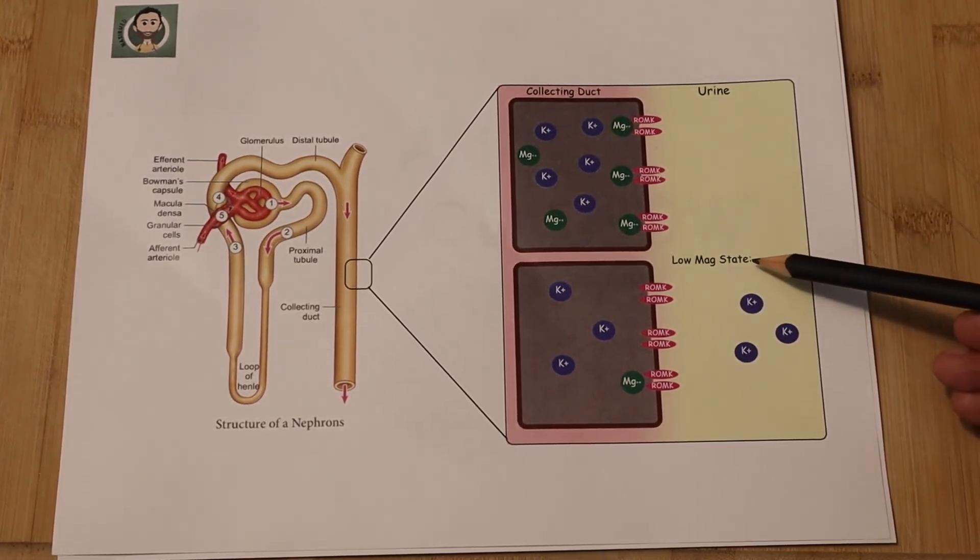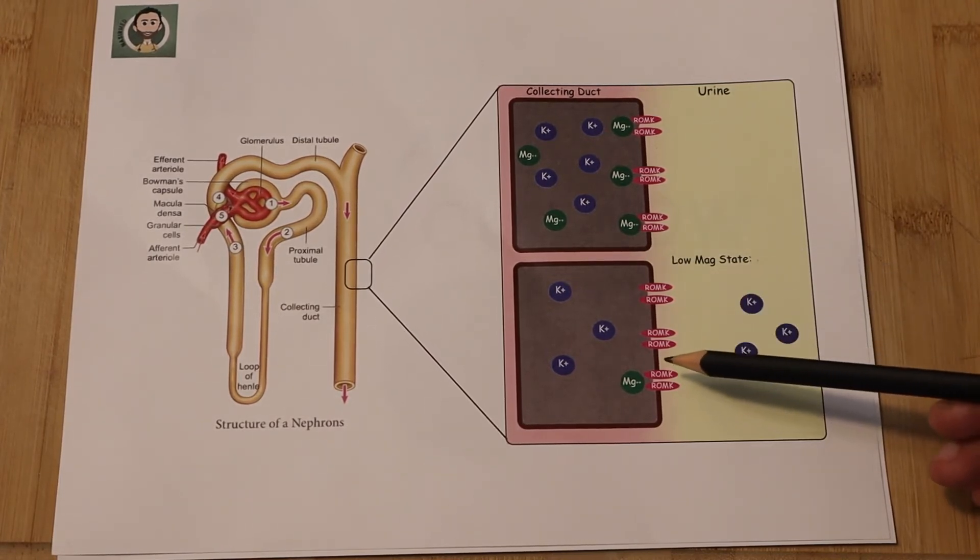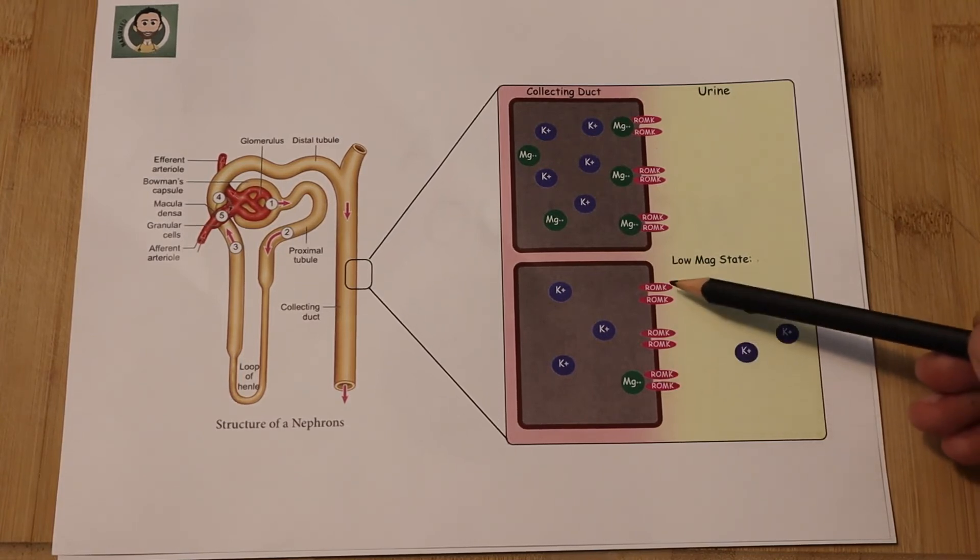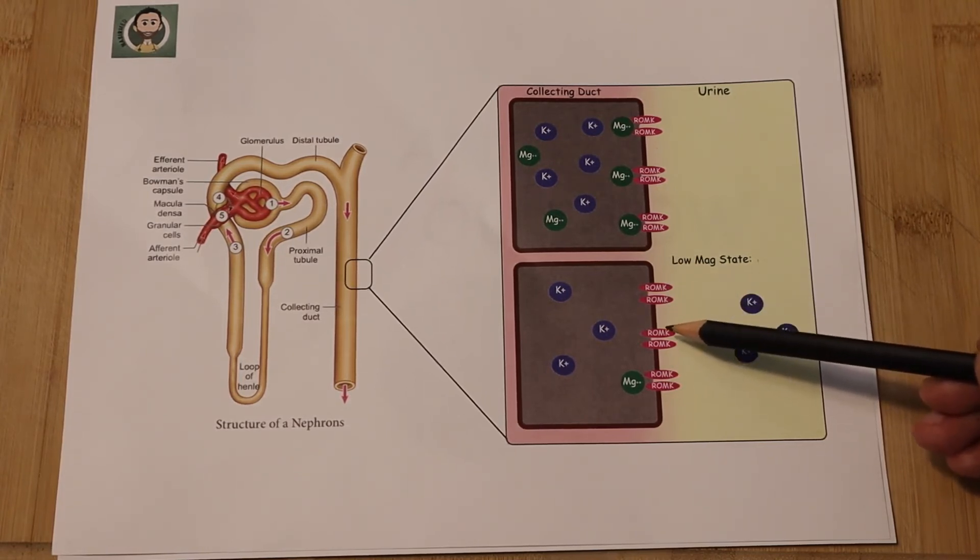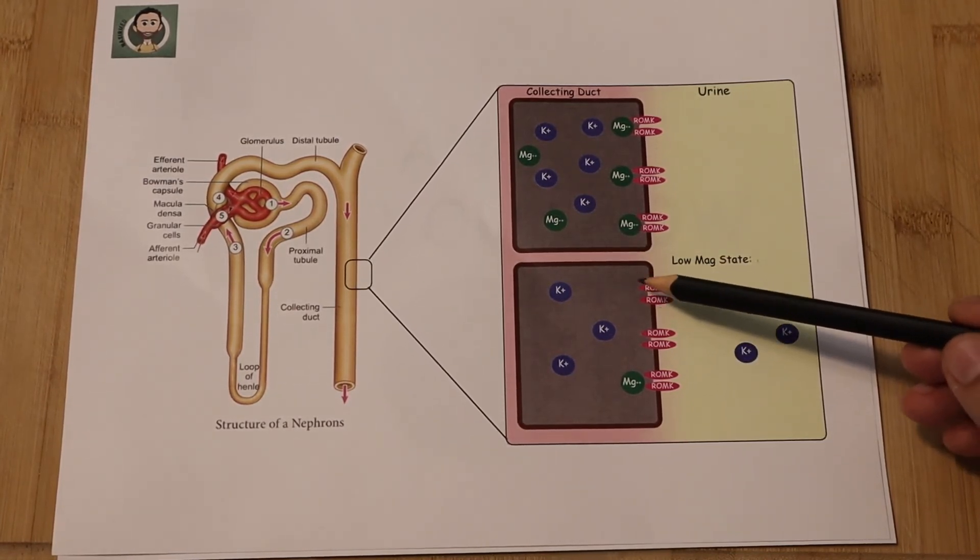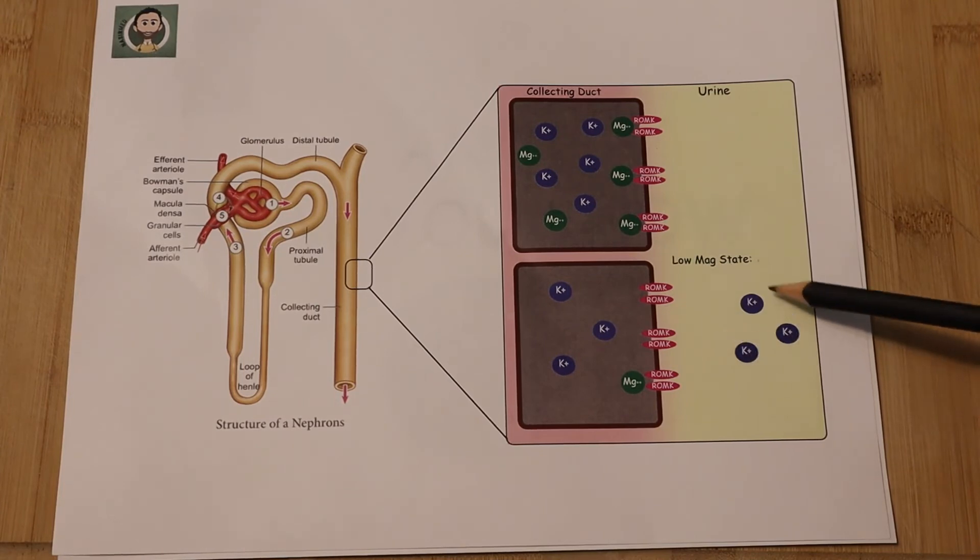However, if you have a low magnesium state, such as in our patient, you will have less magnesium ions to bind to those channels. So some of these channels will actually remain open and will lead to a continuous efflux of potassium extracellularly into the urine.